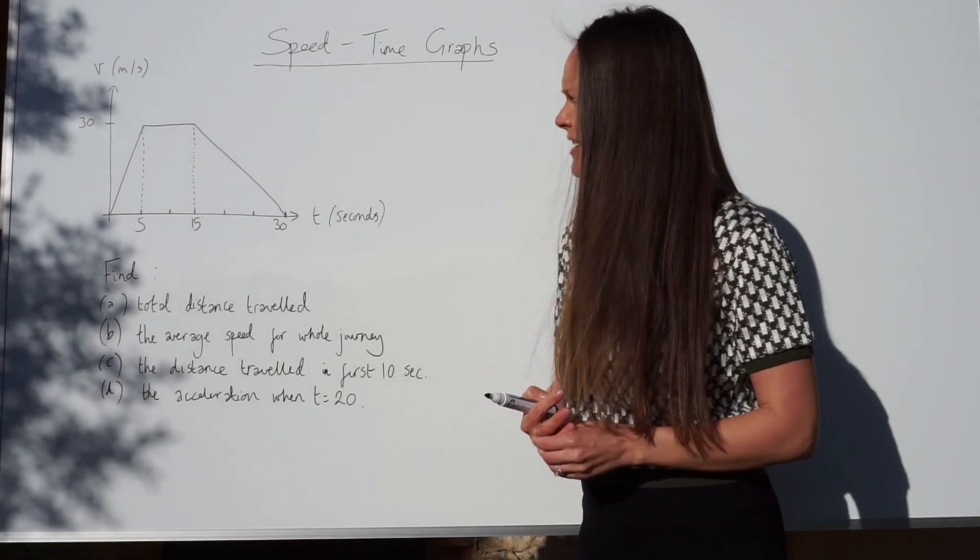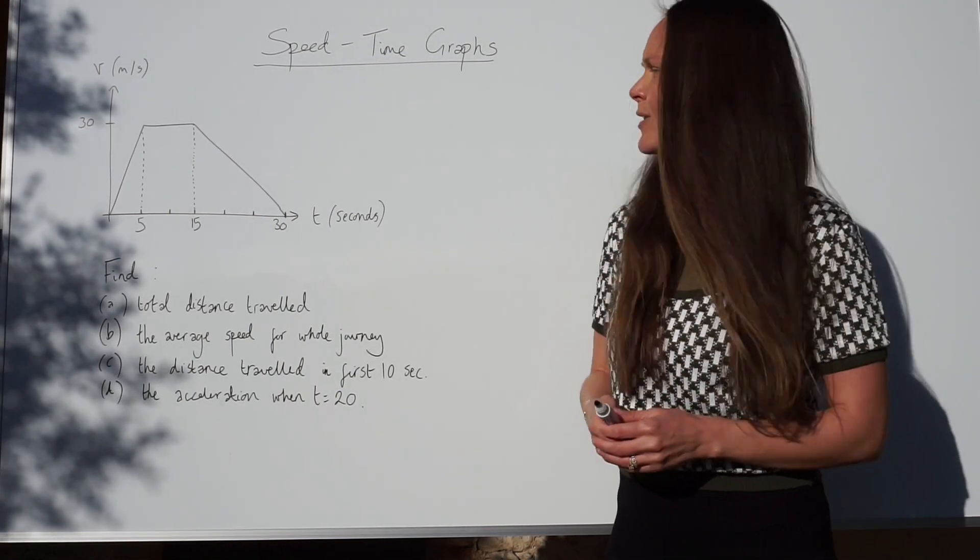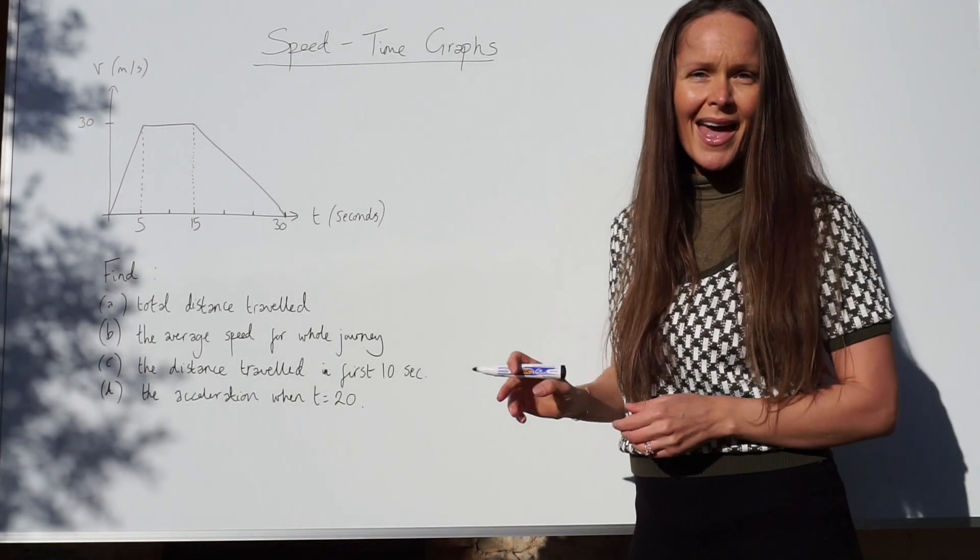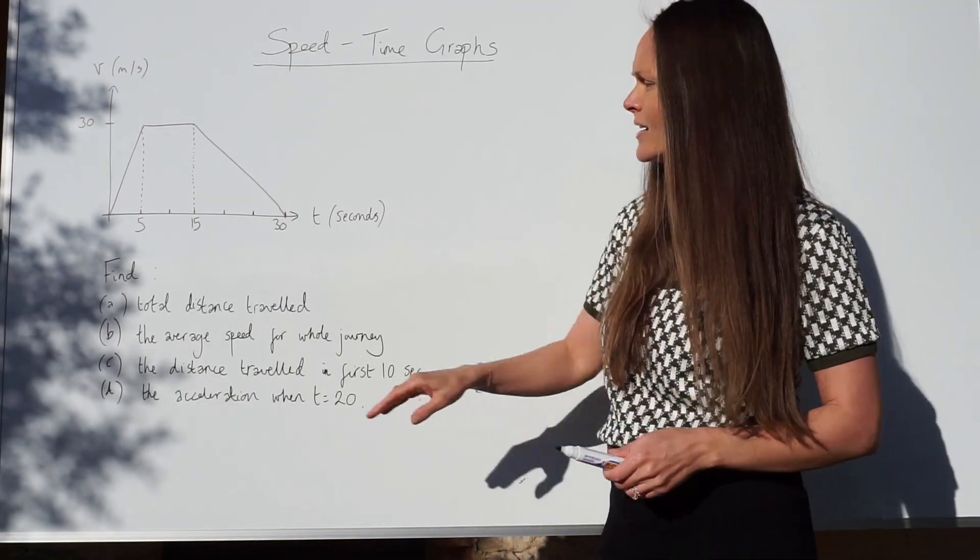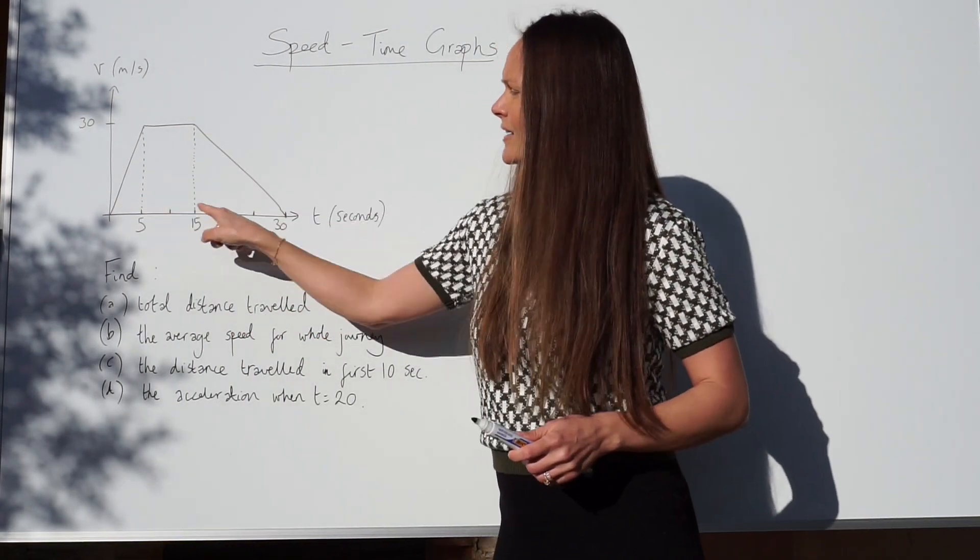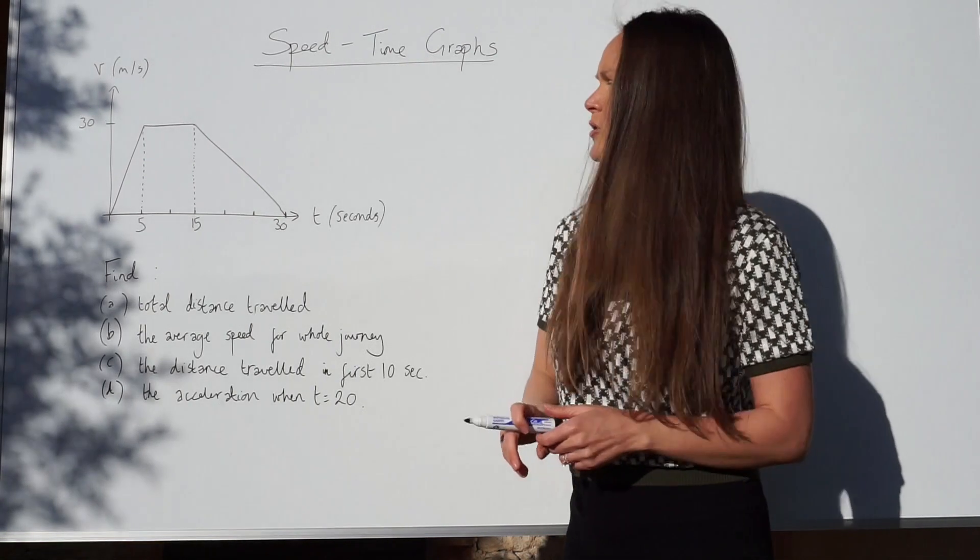For the first part where it asks us to work out the total distance travelled, what you need to do with a speed time graph is work out the total area underneath the graph. So, the total distance travelled is the entire area here.